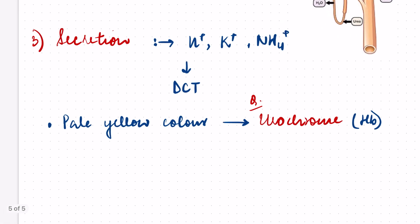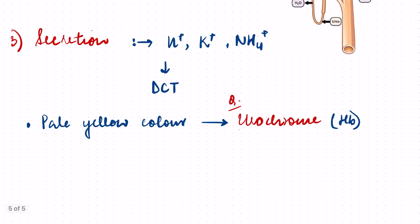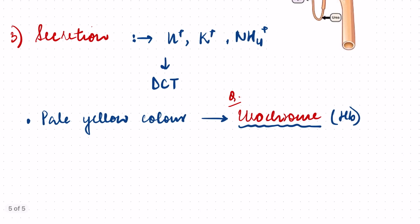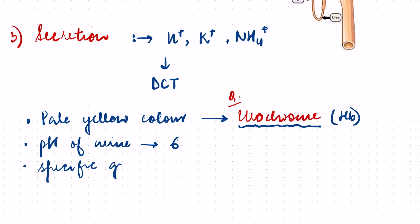Urochrome is formed in the blood due to hemoglobin reduction. You just have to know the name of this pigment. Another question is: what is the pH of urine? The pH of urine is almost 6. The specific gravity of urine has been asked: 1.01 to 1.05 is the specific gravity of urine. These are all questions that have been asked and you need to know this.